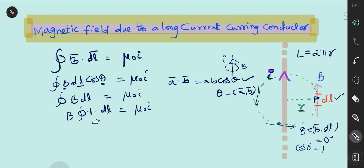Integral of dL is L which is equal to μ₀I. Therefore, B into L is 2πr.